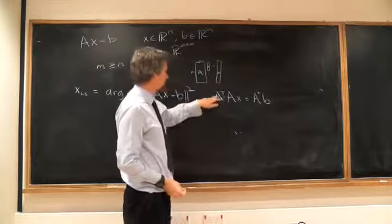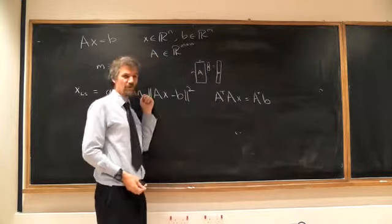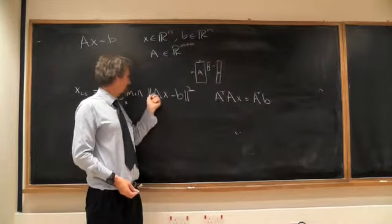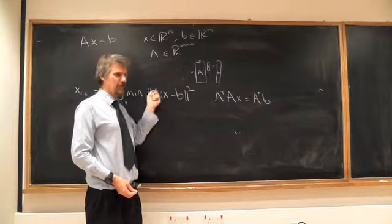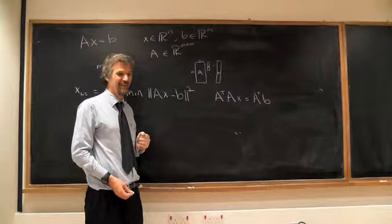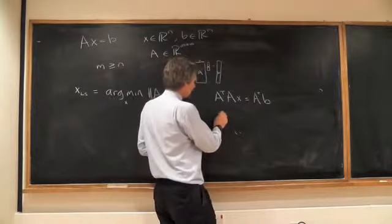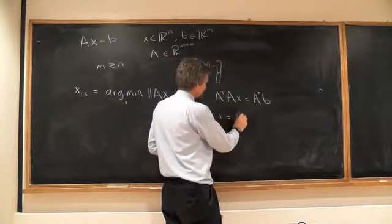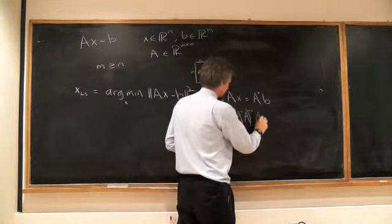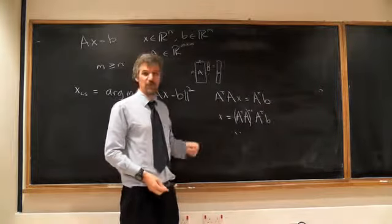Those are the normal equations, which are actually the conditions for a critical point of this. And of course, this is positive. So if it has only one critical point, that has to be a minimum. So you don't have to look at the second derivative to see that. And so in the case that this is invertible, if this is invertible, then there's a unique solution, then that must be the unique minimum.